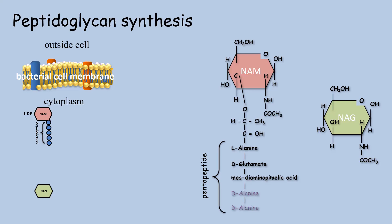In addition, NAM has a peptide attached to it in the length of five amino acids — this is called a pentapeptide. The five circles attached to NAM on the left represent the five amino acids shown on the right.